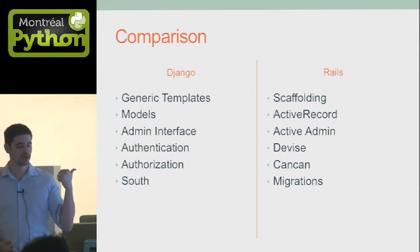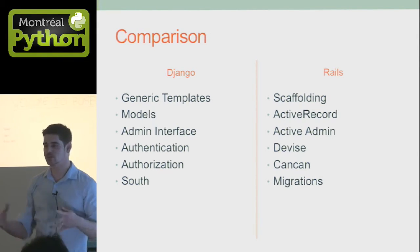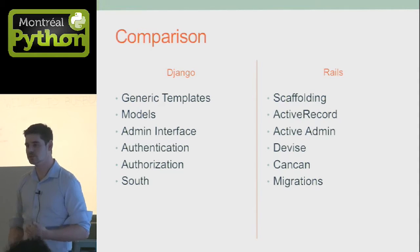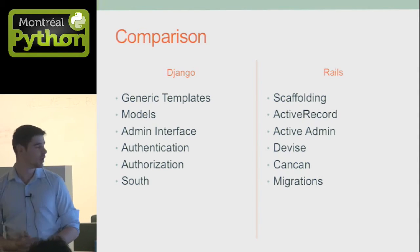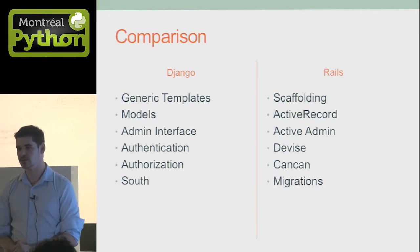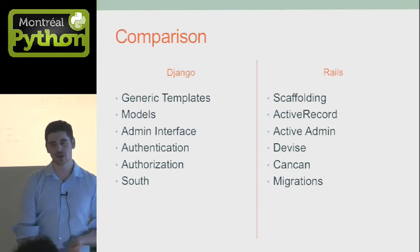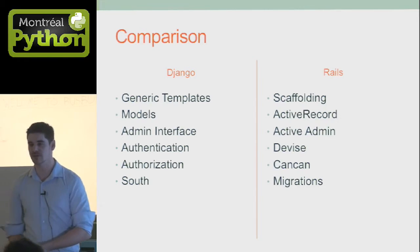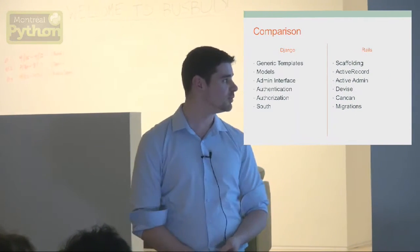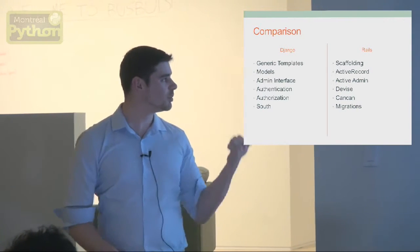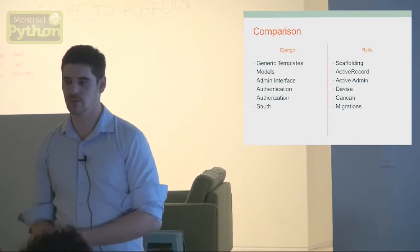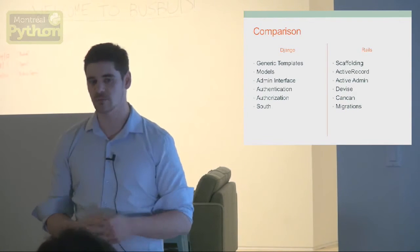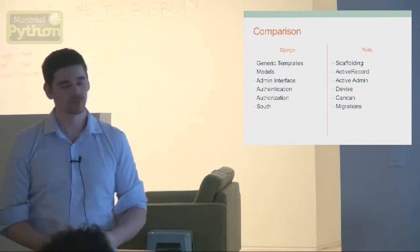In Django you use generic templates, meaning you build your views from scratch and put everything in them. In Rails, we can use scaffolding, which will generate everything we need — the models, the controller, and the views. If you talk to any advanced Rails programmer, they'll tell you they don't use it anymore because it gives you messy code that's hard to support long-term. But if you're starting out, it's pretty nice to have. The ORM equivalent of Django's models is called ActiveRecord, which was built into Rails originally but has since been extracted from it.